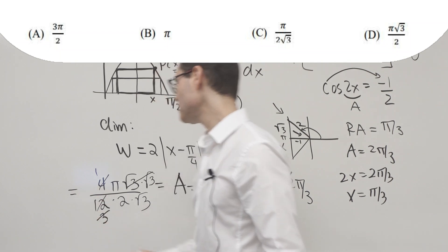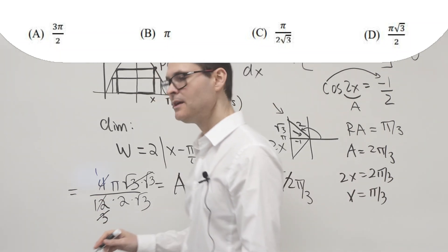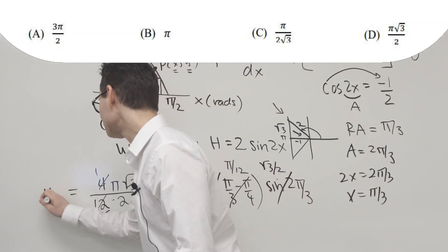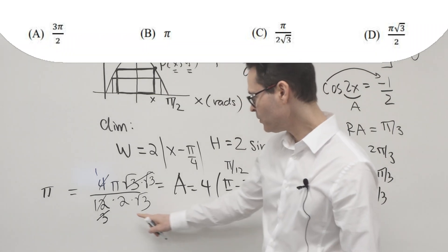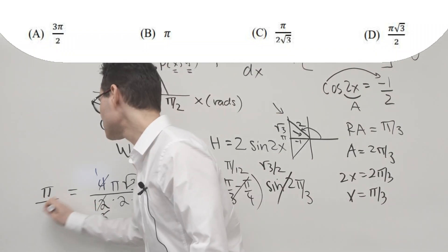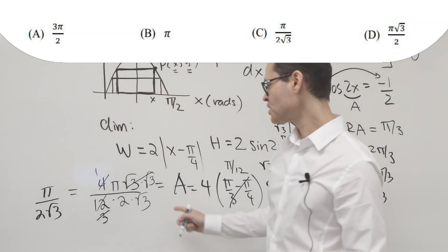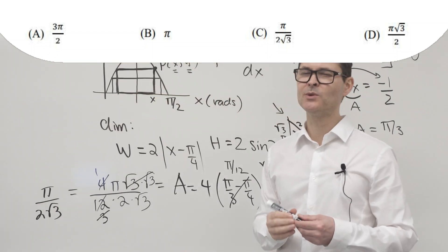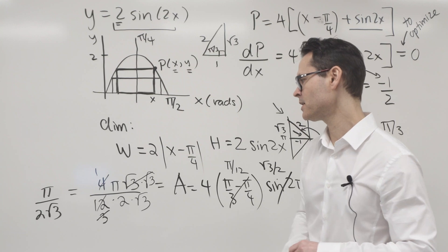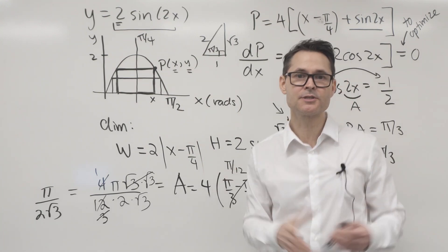That's it. So the answer that's posted on the test is pi over two root three. So always check. You might have the right answer, but you might have to adjust it a little bit to make sure it complies with the possible answers. It's multiple choice.